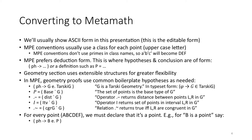The geometry section uses extensible structures for greater flexibility. In MPE, geometry proofs use common boilerplate hypotheses as needed. In particular, PH implies G exists in Tarski G, which simply says that G is a Tarski geometry. P equals base of G says that the set of points is the base type of G, and then we have operator dot minus which returns a distance, I returns an interval, and dot tilde is the congruence relationship.